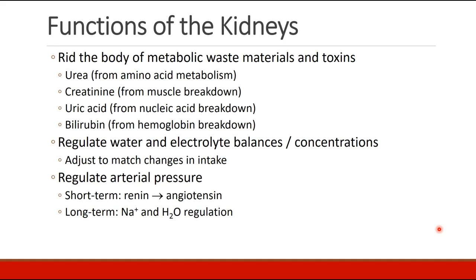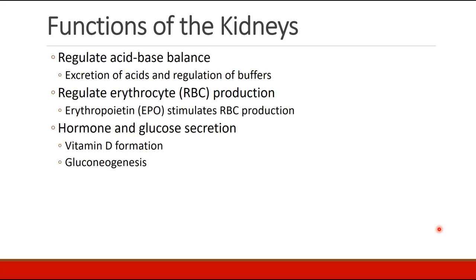The kidneys also regulate water and electrolyte balances and concentrations, adjusting them to match changes in intake. The kidneys regulate arterial pressure on the short term through the renin-angiotensin system and on the long term through sodium and water regulation. They also regulate acid-base balance through the excretion of acids and regulation of buffers, regulate erythrocyte production by secreting erythropoietin, which stimulates red blood cell production, and have a role in hormone and glucose secretion, including vitamin D formation and gluconeogenesis.